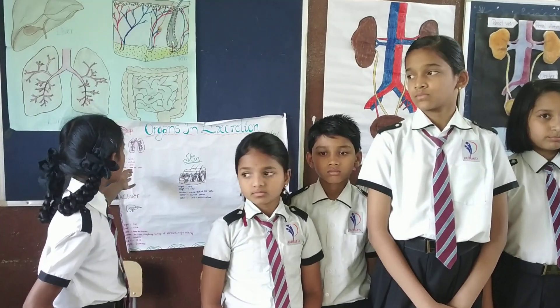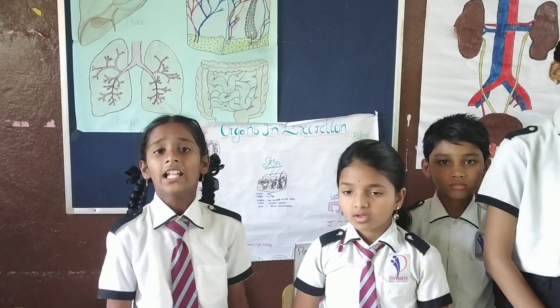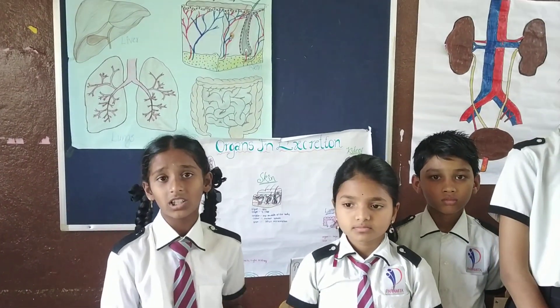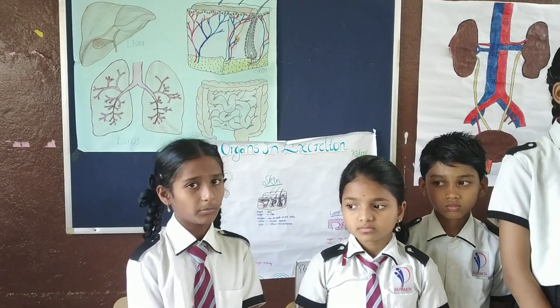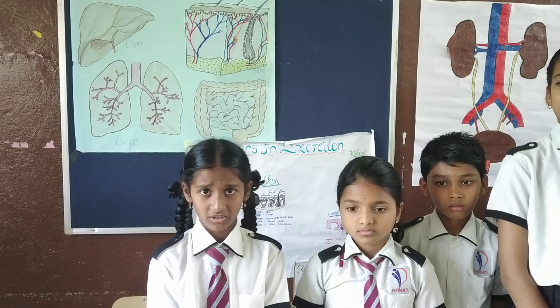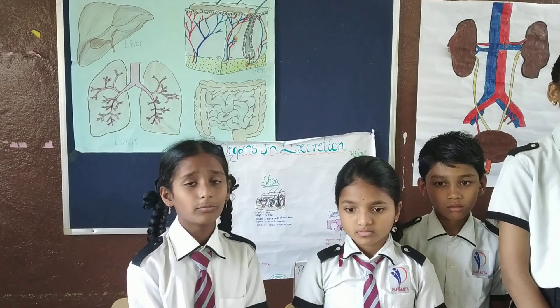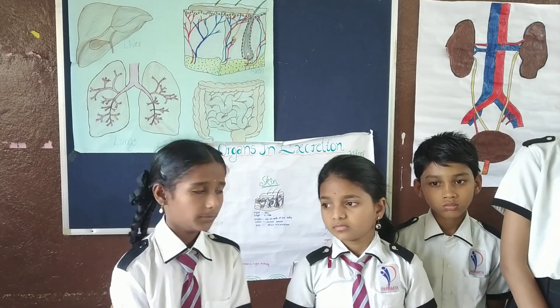Kidneys are bean-shaped organs located on each side of our backbone. They are reddish-brown in color. The size of the male kidney is 11 cm and the female kidney is 10 cm, because the male kidney works more than the female.